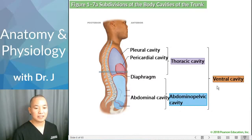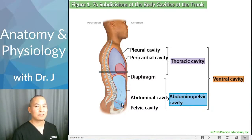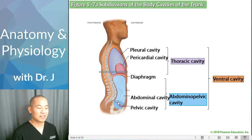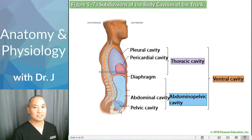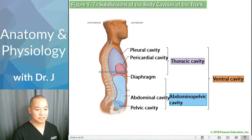You have the abdominal cavity and the abdominal-pelvic cavity. Unlike the diaphragm dividing the thoracic and abdominal-pelvic cavity, there is no hard border between the abdominal cavity and the pelvic cavity, but there is an indentation. It is contained within a structure called the pelvic girdle — that's where the pelvic cavity is, housing organs like the urinary bladder, and in women, the uterus.